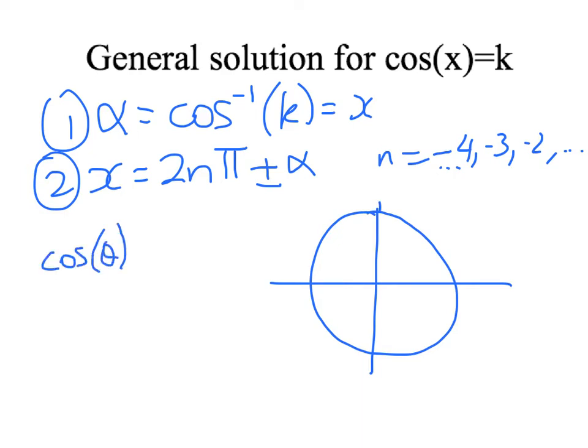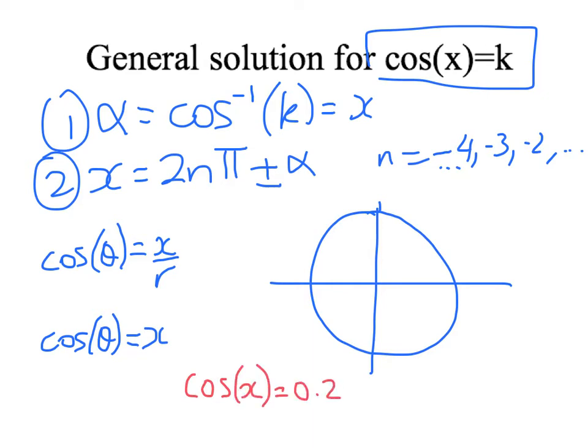Remember that the cosine of an angle is defined as x over r. So when I have a unit circle with a radius of 1, the cosine of an angle is just the x value. So what we've been asked to do to find solutions for cosine of x equals k is to say, for example, in our example, cos of x equals 0.2. What angle is going to give me an x value of 0.2? And you can see, if that's 0.2, that this is the value, so this point here, the coordinates of this, need to give me an x value of 0.2.